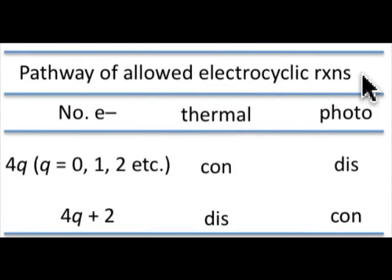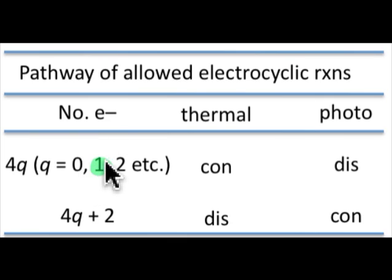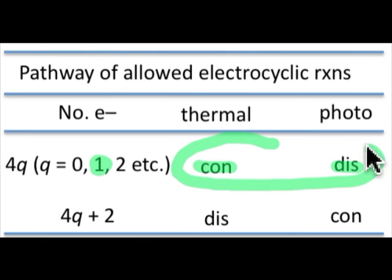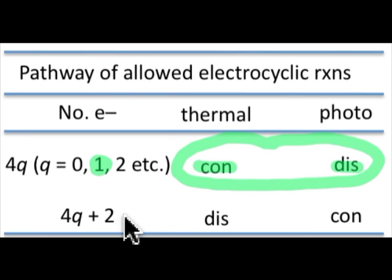This table summarizes the pathway of allowed electrocyclic ring opening and ring closure reactions depending on the number of electrons involved. The example we just looked at was a 4 pi electrocyclic reaction — a 4q process where q equals 1. Under thermal conditions the reaction followed the con-rotatory pathway, while under photochemical conditions it followed the dis-rotatory pathway. Once again, the trends for thermal processes are just reversed for photochemical, and this holds true for all 4q plus 2 electron substrates as well.